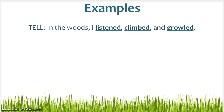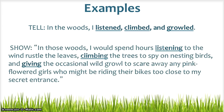As a writer, you have a choice whether you show your reader or tell your reader. This is a sentence that is definitely telling: "In the woods, I listened, climbed, and growled." Now, it is a magic three sentence because you're using three verbs and two commas. However, it's not a very well-written sentence — I can't really imagine anything as a result of reading it. However, this example is definitely showing us the imagery we want: "In those woods, I would spend hours listening to the wind rustle the leaves, climbing the trees to spy on nesting birds, and giving the occasional wild growl to scare away any pink-flowered girls who might be riding their bikes too close to my secret entrance." Those are both just one sentence long, but we can definitely tell the difference between a telling magic three sentence and a showing magic three sentence.